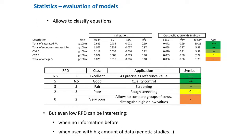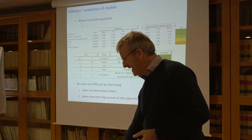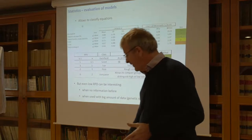One important point for geneticists: even with a low RPD value, a model can still be useful. If you can apply a model to a very large dataset — which is typically the case with milk recording data — even a model with poor individual precision can predict a large number of spectra across different individual cows and still provide useful results.